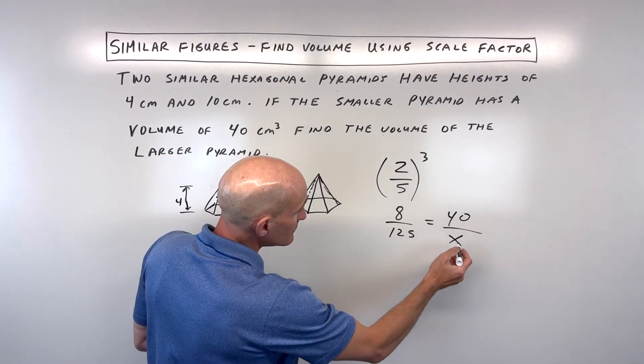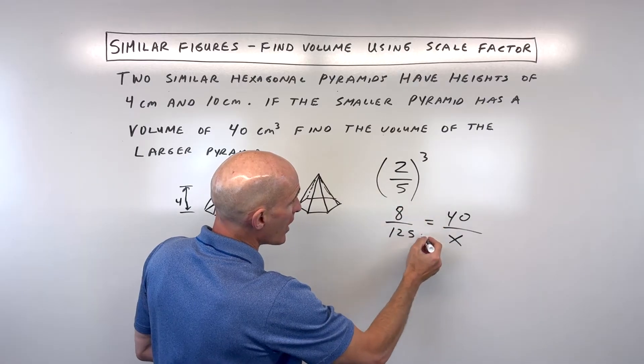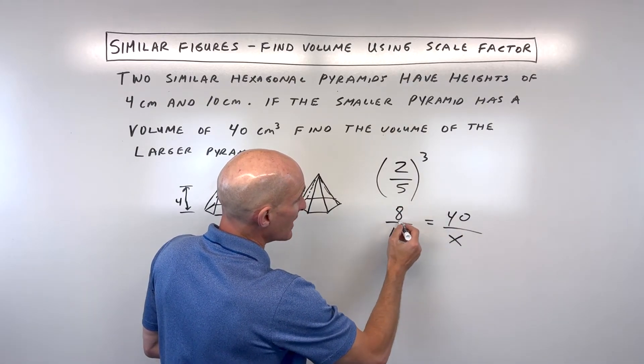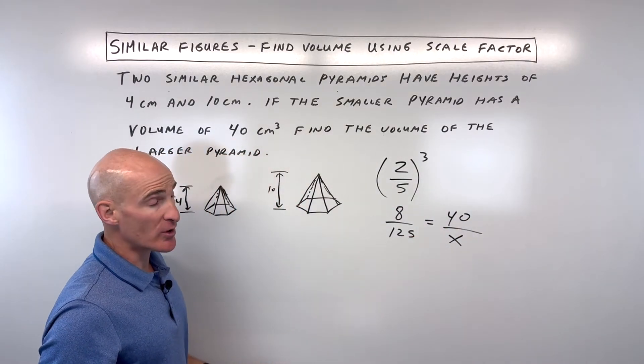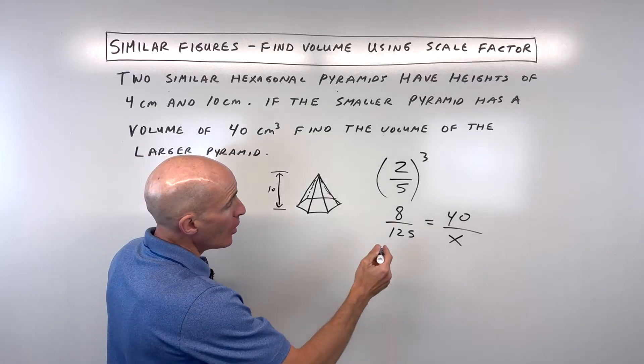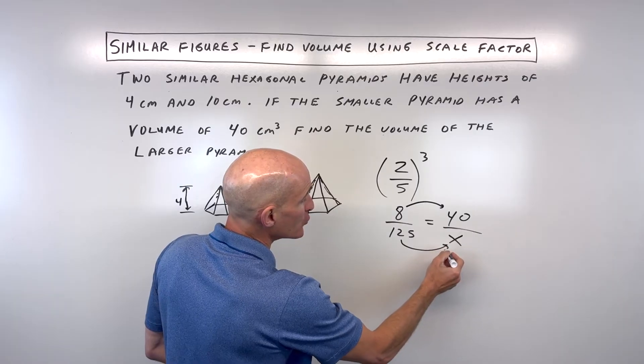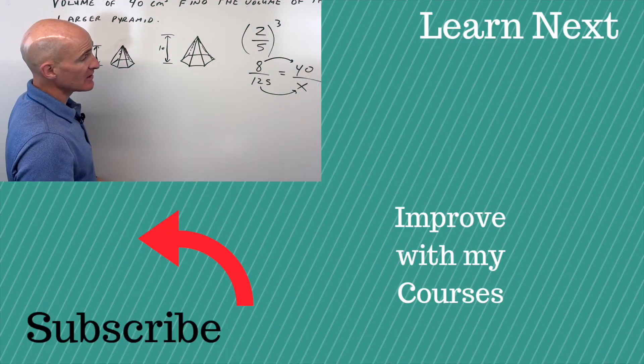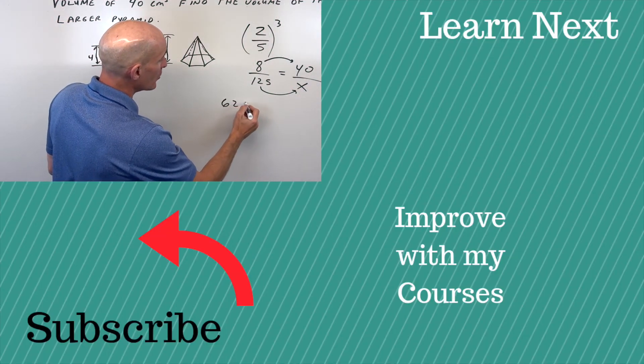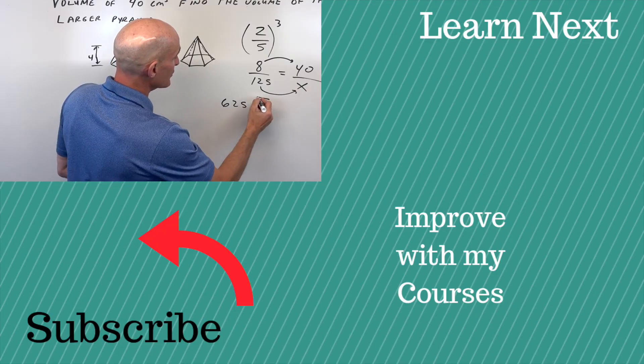Now to solve this, we can do a couple of things. We could do the cross product, where we say 8x equals 40 times 125 - a lot of students like that method. Or we can say 8 times 5 is 40, so 125 times 5 is 625 centimeters cubed, and that would be the volume of the larger pyramid.